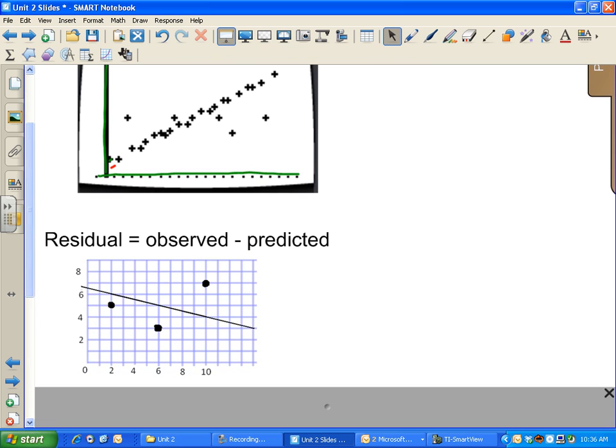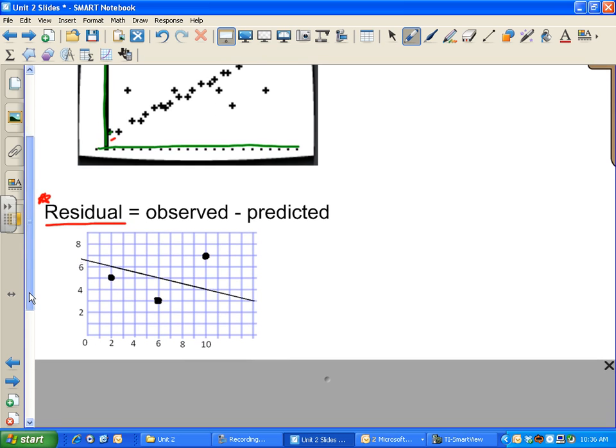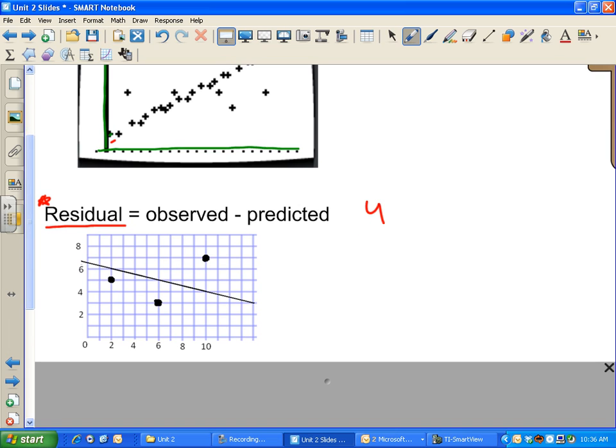So I need to define a word to explain where the best line comes from. And that word is residual. This is going to be very important. The residual is, when we're thinking in terms of the y variable, the observed minus the predicted.